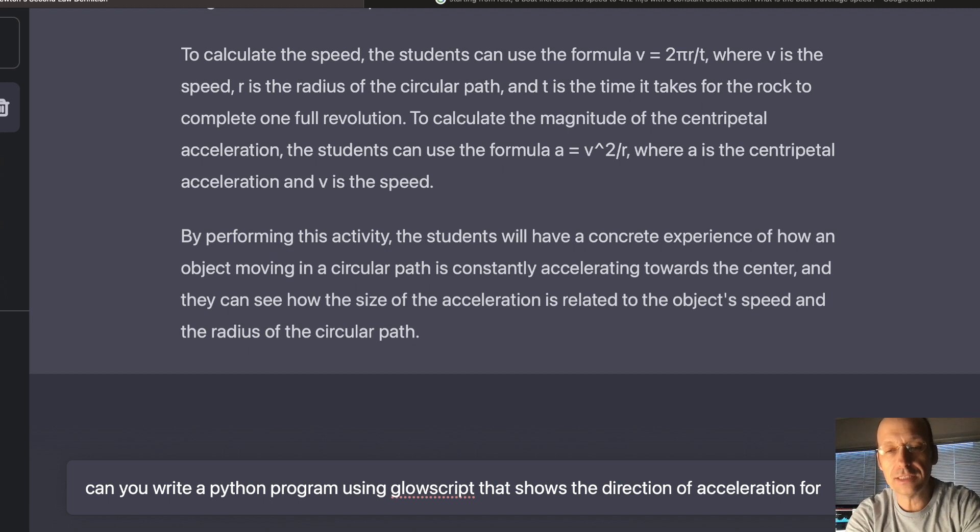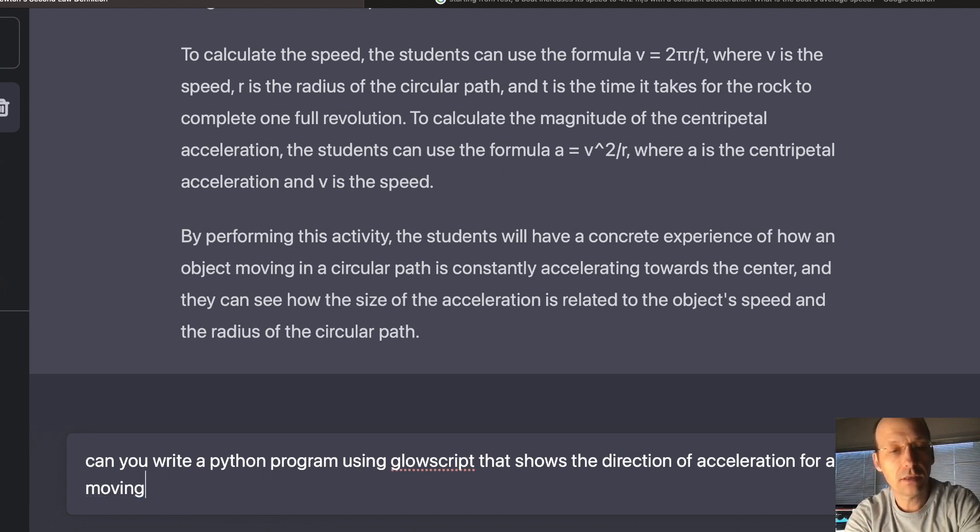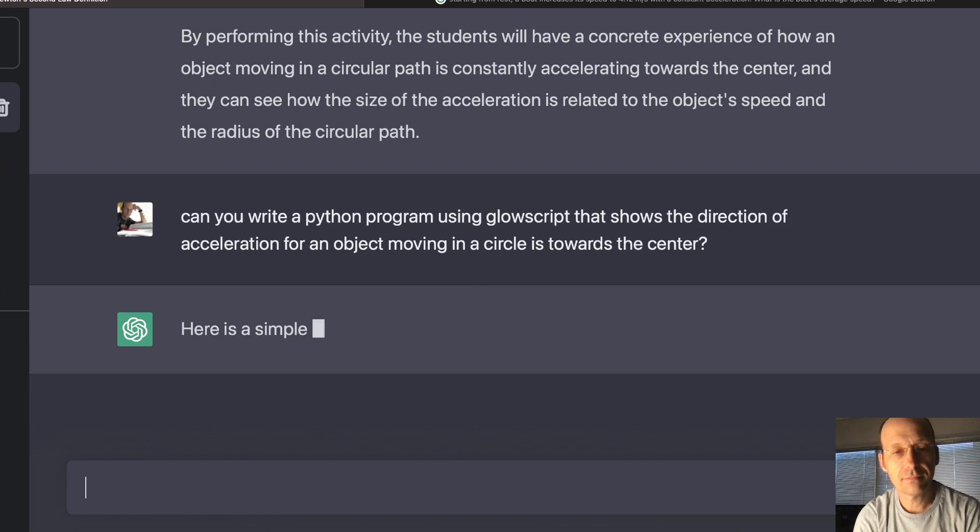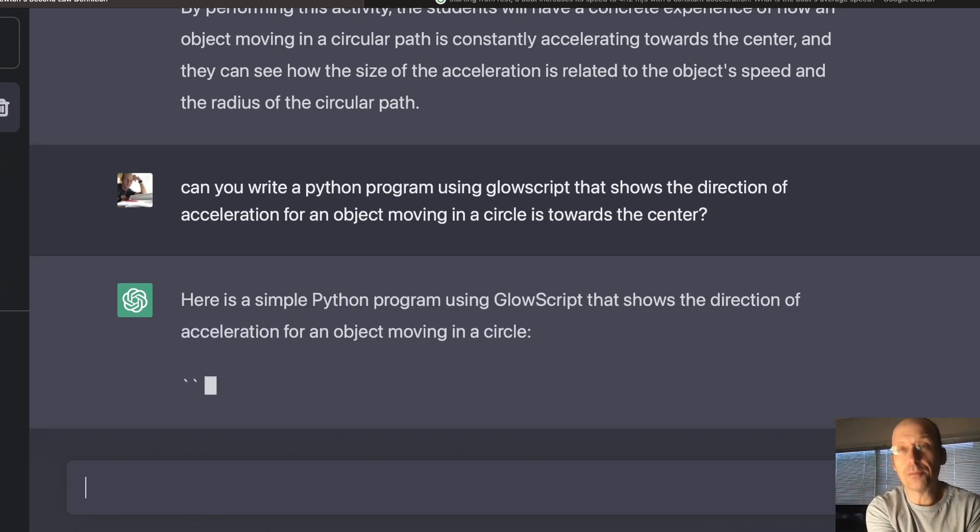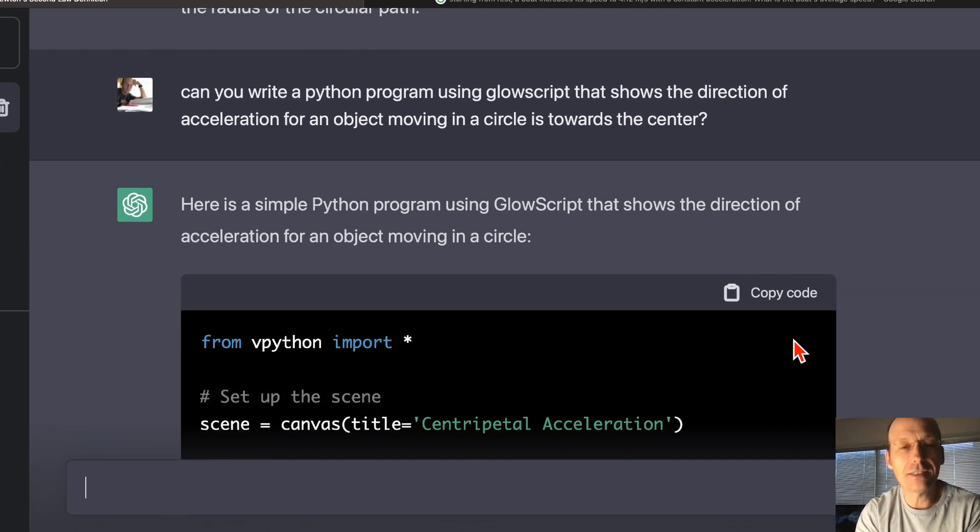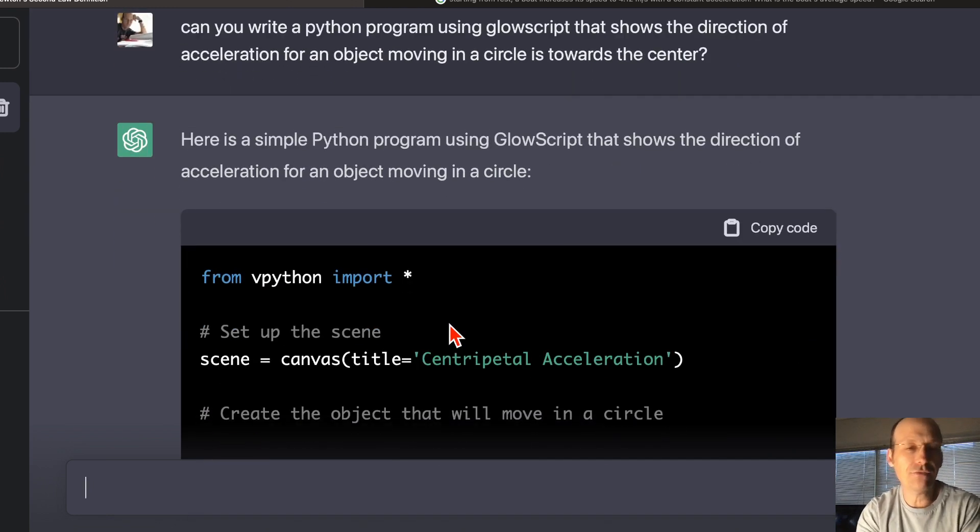Okay. That shows the direction of acceleration for an object moving in a circle is towards the center. It's going to say, sure, I can do that. Here's your program. Oh, it didn't say sure. Okay. It did say GlowScript. Look at... It correct... See, but it didn't use GlowScript, because GlowScript does not have this. Well, that's fine.